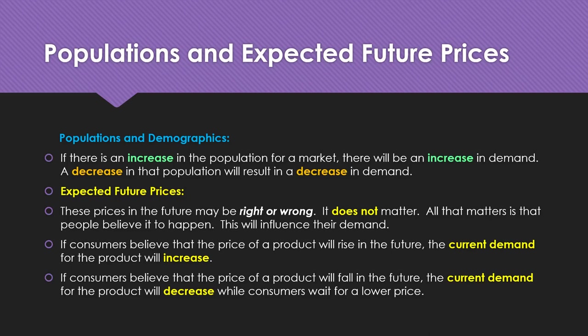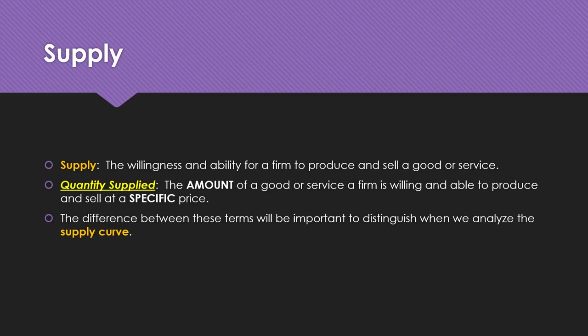That basically wraps up the entire spectrum of demand — what it is, quantity demanded, the difference between the two, the demand curve, the law of demand, and the variables that can affect market demand beyond price. Now we'll transition to talking about supply. A lot of the upcoming slides on supply might seem like mirror images of demand, and that's true — because we're now looking at it from the perspective of a firm trying to get as much money as possible for the reward for the risk they're undertaking, rather than a consumer trying to maximize a limited budget.